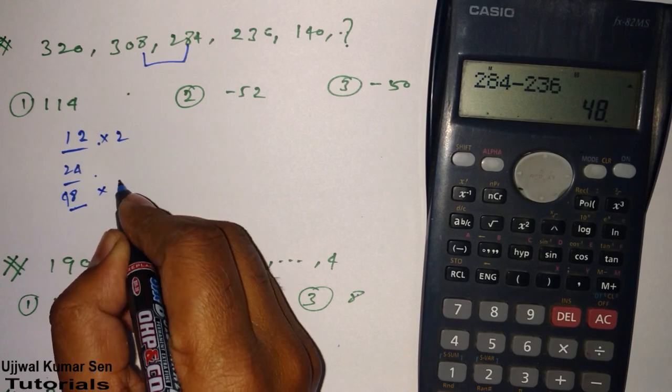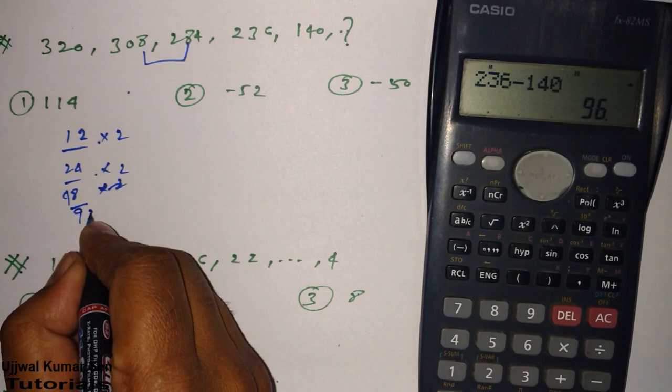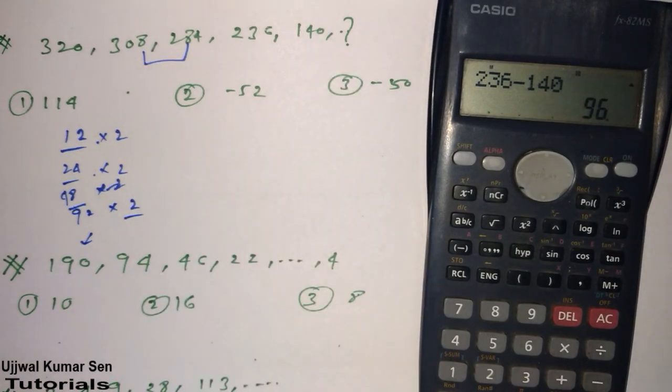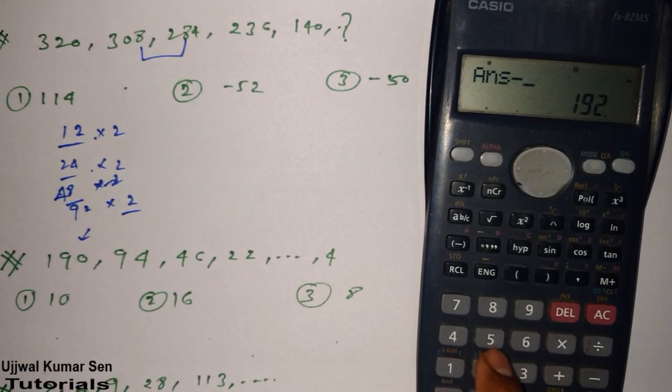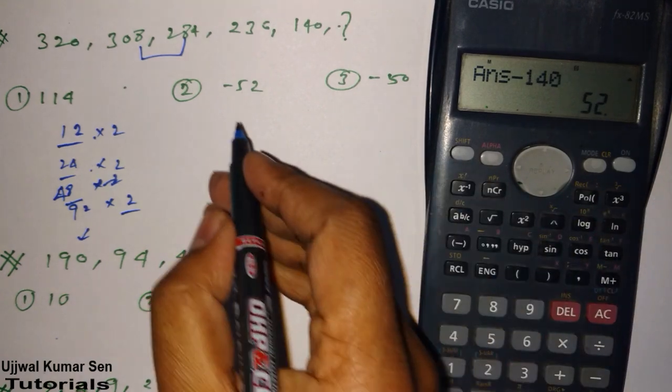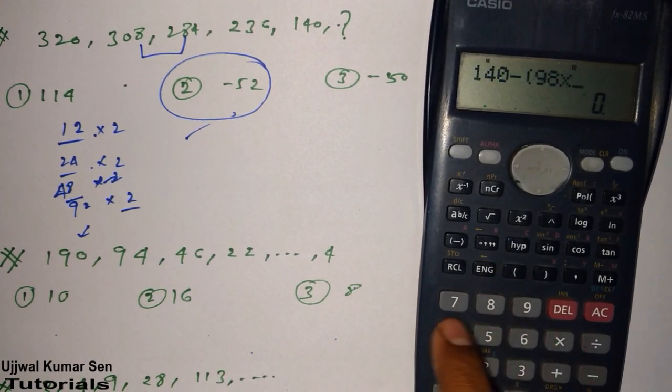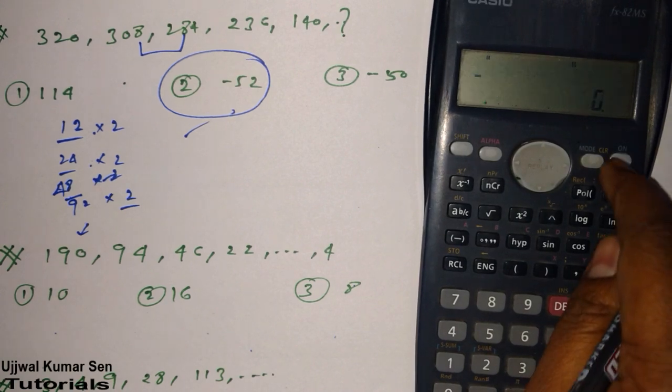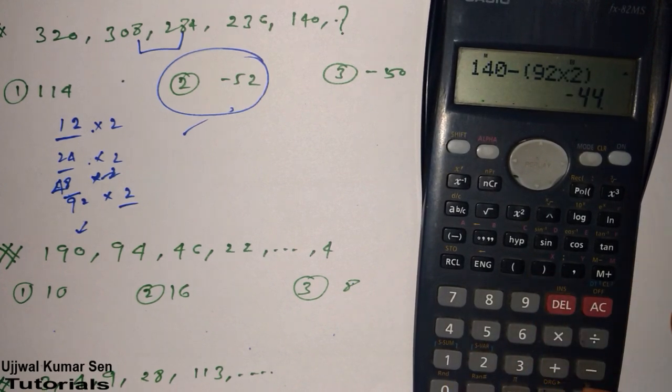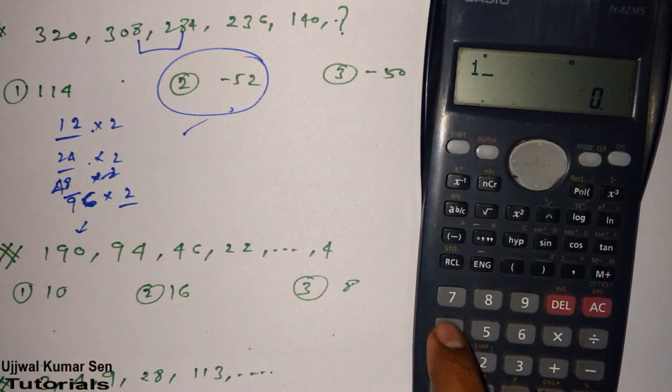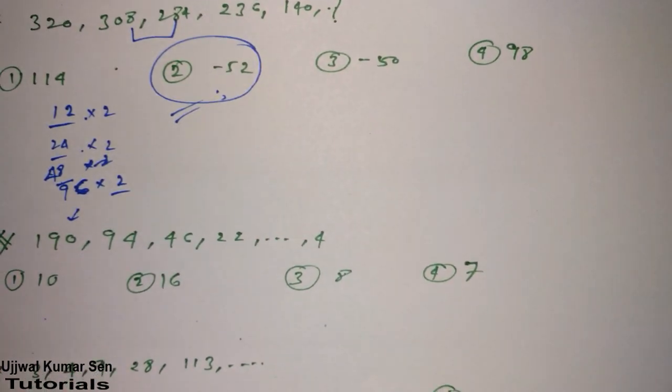236 minus 140 is 96. Multiple with 2 and minus here. So 96 multiple 2. The right answer is—let me recalculate. 140 minus 96 multiple 2 is minus 52. So the answer is minus 52. I hope you got it.